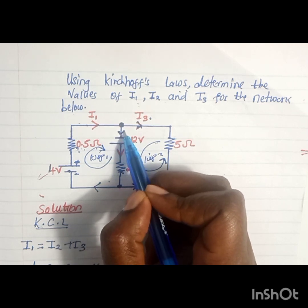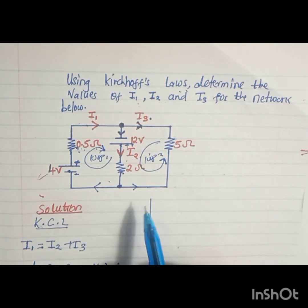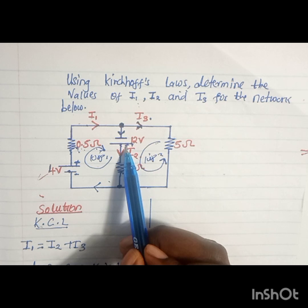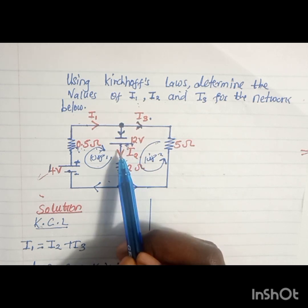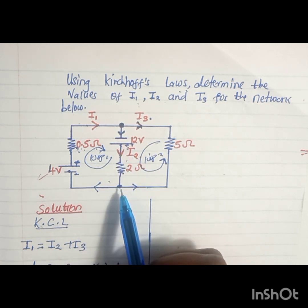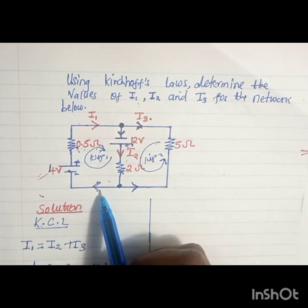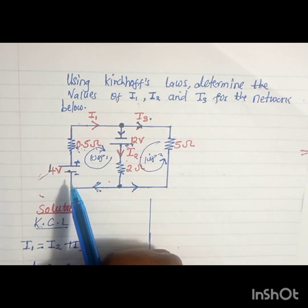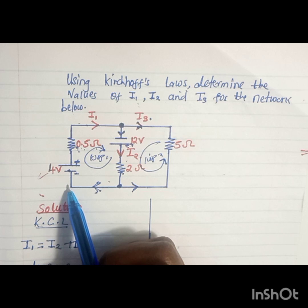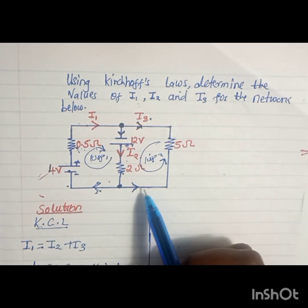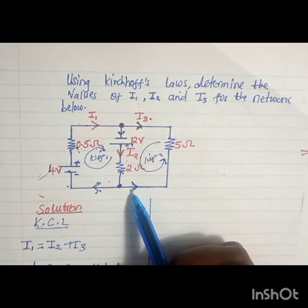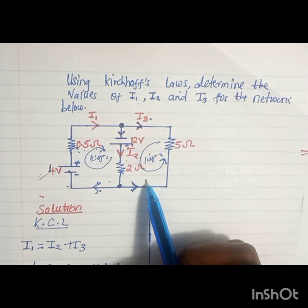We still have the positive terminal here, so current will be flowing from the positive terminal. When it reaches this junction, some current will follow this path and the other path. On this side when it follows this path we have a complete loop. When the current follows the other path we'll have a complete loop. That's what we have.